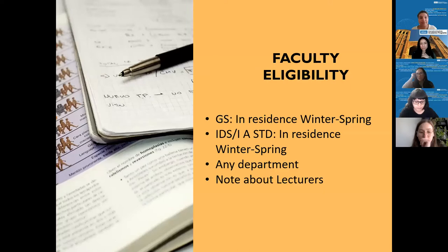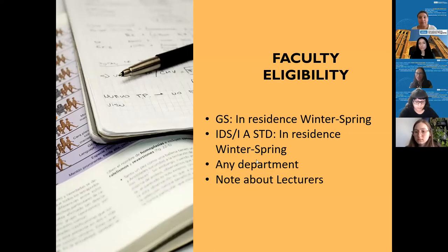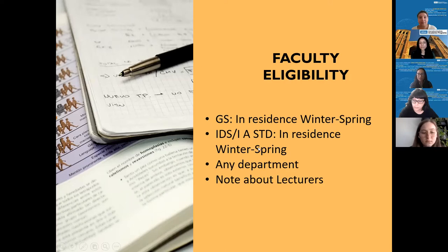You're not alone — finding a faculty member is a common shared concern. We've seen students solidify this early in advance, and we've seen some students scrambling at the last minute. Just to make sure you're aware of the eligibility requirements: for Global Studies, the faculty member has to be in residence for at least winter and spring. For International Development Studies and International Area Studies, the faculty member has to be in residence fall, winter, and spring.